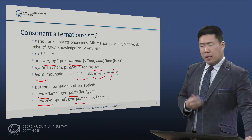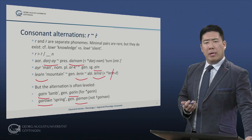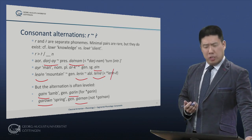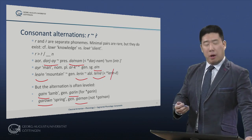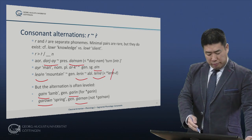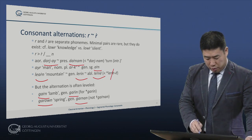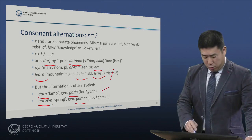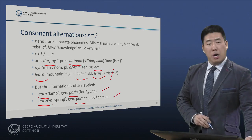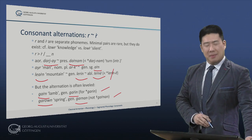So we have a fairly complex situation in which certain words alternate between the two Rs, while others have generalized either R-dot or R without a dot.